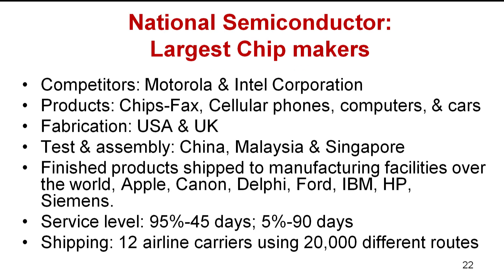To illustrate complexity, consider National Semiconductor, the largest chip maker, competing with Motorola and Intel. Their products include chips, cellular phones, and computers. They have two fabrication units — one in the USA and one in the UK — and testing and assembly facilities in China, Malaysia, and Singapore. Their finished products are shipped to Apple, Canon, Delphi, Ford, IBM, HP, and Siemens. Despite this, they cannot achieve 100% service level — only 95% with 45-day shipping. They use 12 airline carriers and 20,000 different routes, showing how complex a supply chain can be.